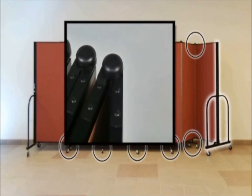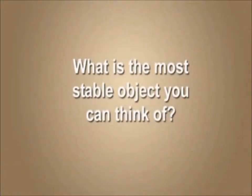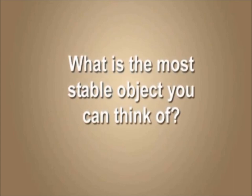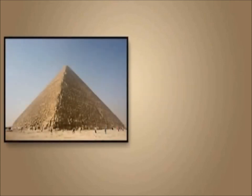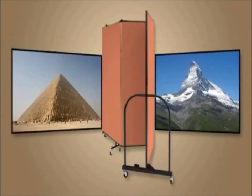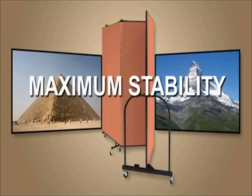When we ask people what is the most stable object they can think of, we commonly get two answers: the Egyptian pyramids or a mountain. Both of these get their stability from the fact that they are narrow at the top and wide at the bottom. The greatest width and weight is at the base to prevent them from being top-heavy. The ScreenFlex end support is designed in this exact same fashion to provide maximum stability and maximum vision when moving the divider.